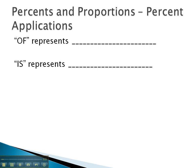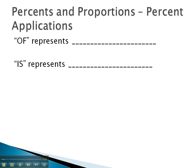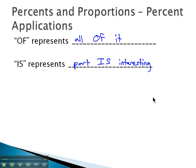When we're solving an application, we're going to think about the 'of' representing all of the stuff — all of it. If it's representing the whole, that's the 'of' part of our proportion. The 'is' then is the part that is interesting to the problem. For example, if we're looking for the percent of children that are born with a certain defect, the part that is interesting is the number that have the defect. It is what the percent is interested in — that is the 'is' part in the application.